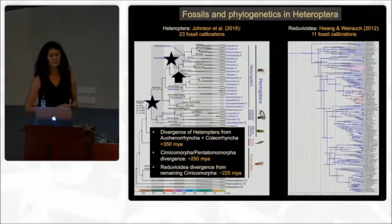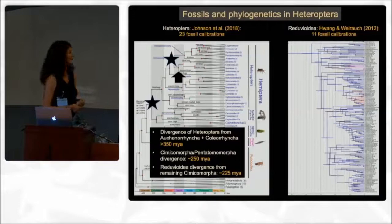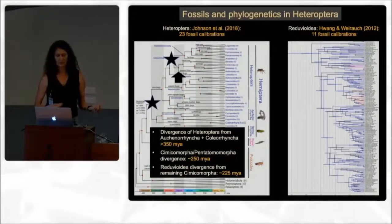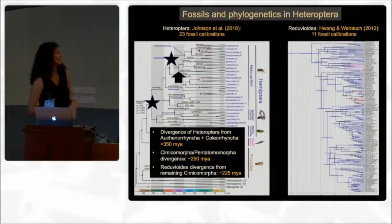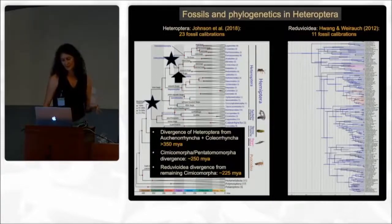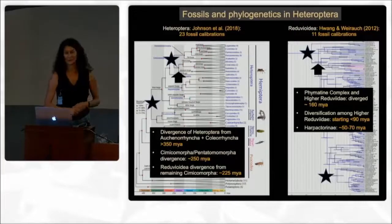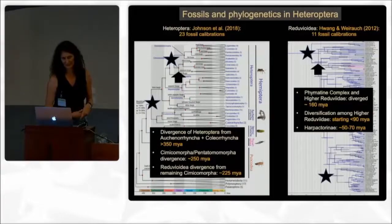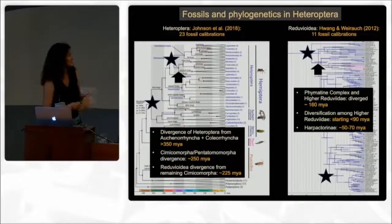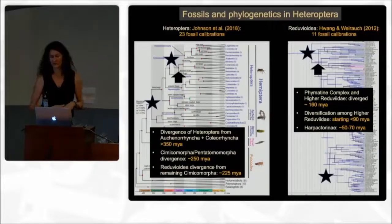These analyses show us — showing the Johnson et al. study as an example — that the divergence of Heteroptera from Orcanorinca and Cardioptera happened about 350 million years ago; the split between Ximicromorpha and Pentatomorpha about 250 million years ago; and Reduvioids may have diverged from the remaining Ximicromorpha about 225 million years ago — way before we have any fossils to look at. We have also done studies on Reduvioids, though one of the fossils was horribly misplaced in that tree. The phymatine complex in higher Reduvioids diverged about 100–160 million years ago, well before the Cretaceous amber fossils.